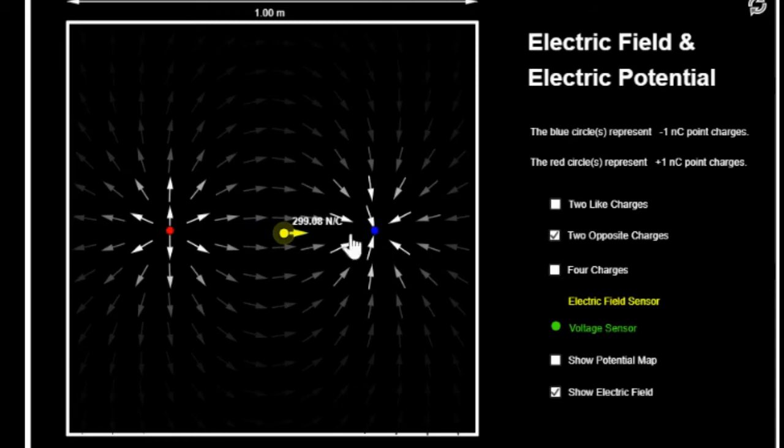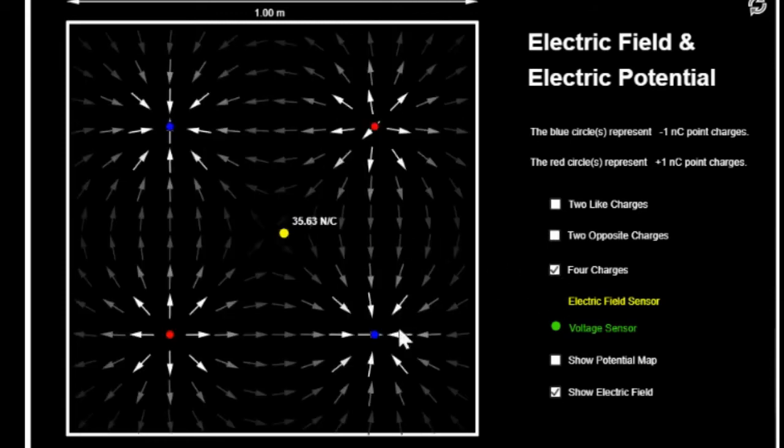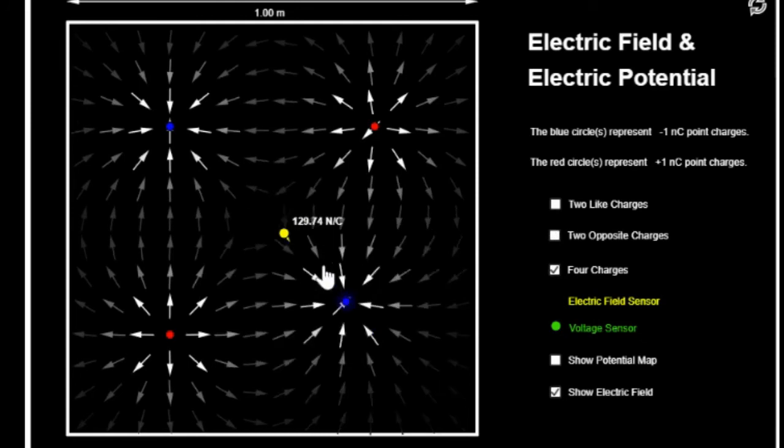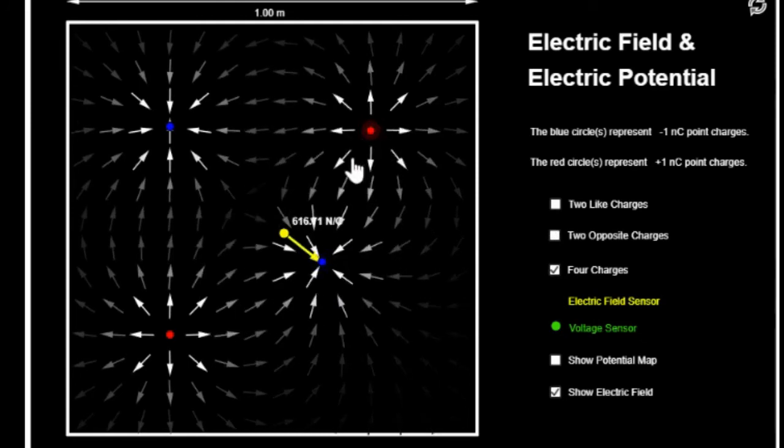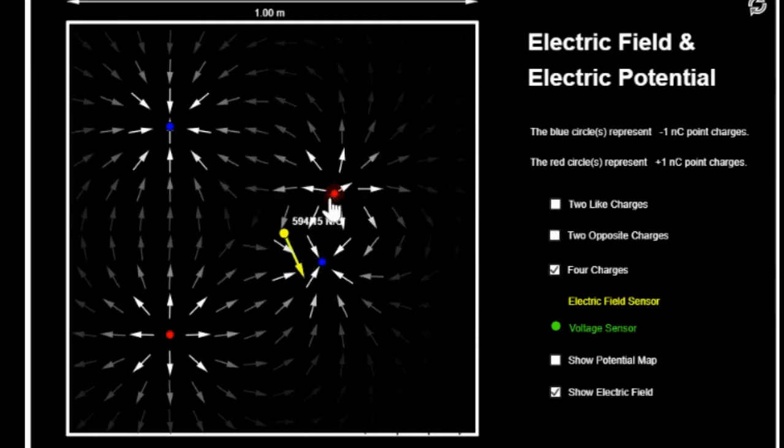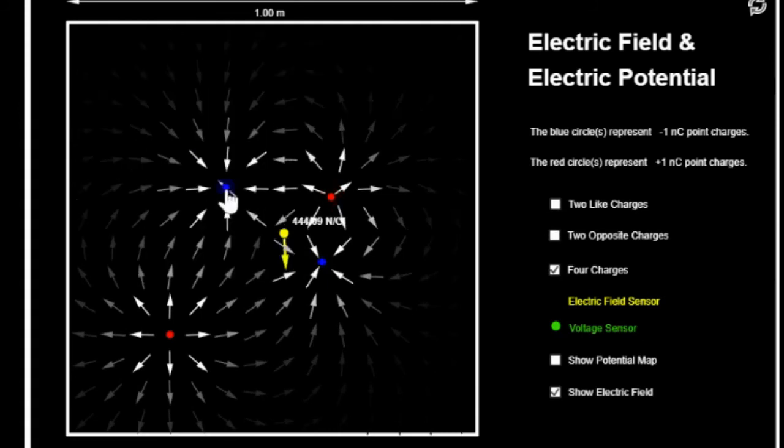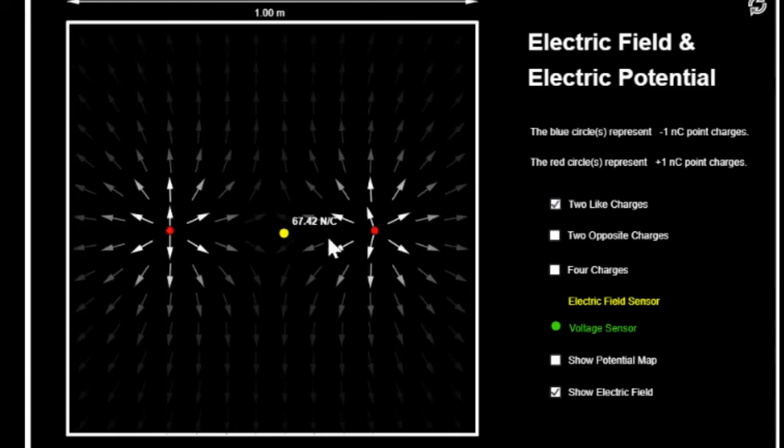And you could see too, if you had four charges, really starts to get a little wild here. And you can move things around and see like how it increases, changes around, et cetera. So that is electric field. I'm going to come back to two like charges. And I want to show you another sensor called the voltage sensor.